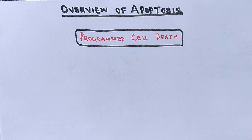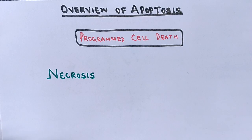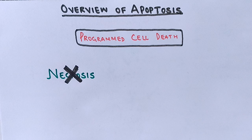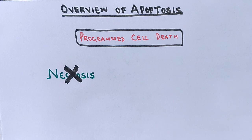Always make sure to keep a difference between apoptosis and necrosis, as necrosis is very different from apoptosis, but the result is the same — the death of the cell. Necrosis is a form of cell injury which results in the premature death of cells, and it is not programmed like apoptosis.